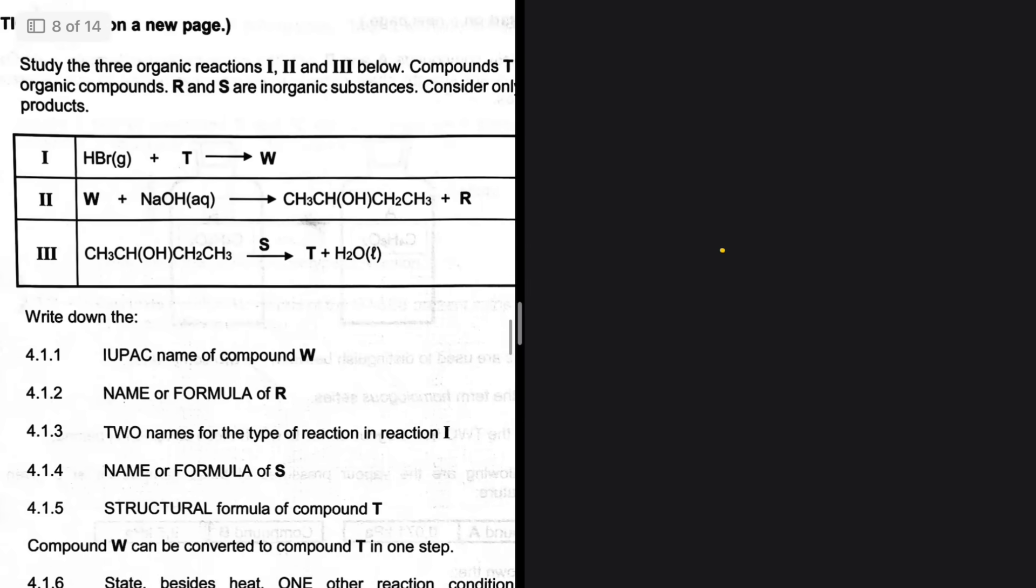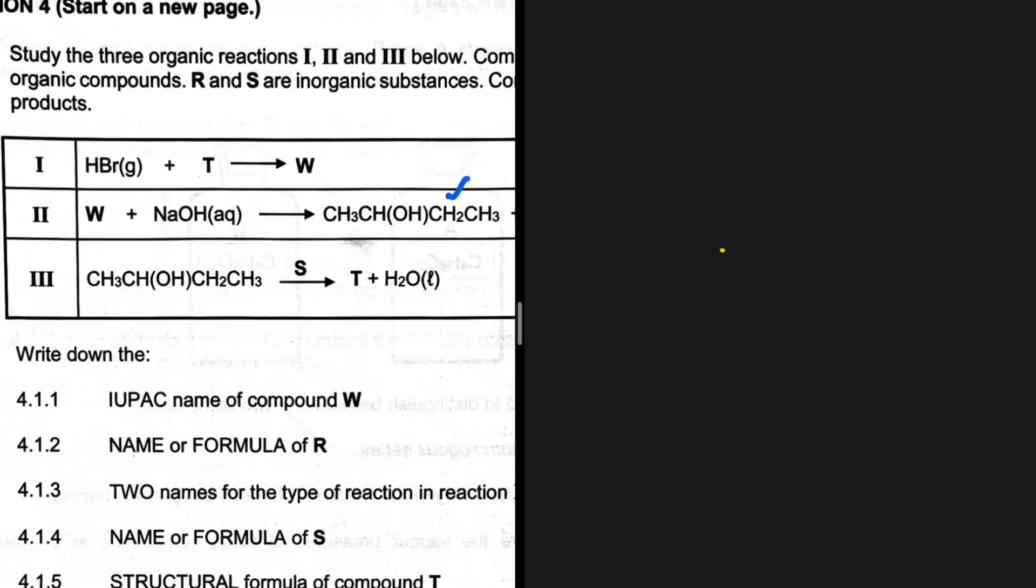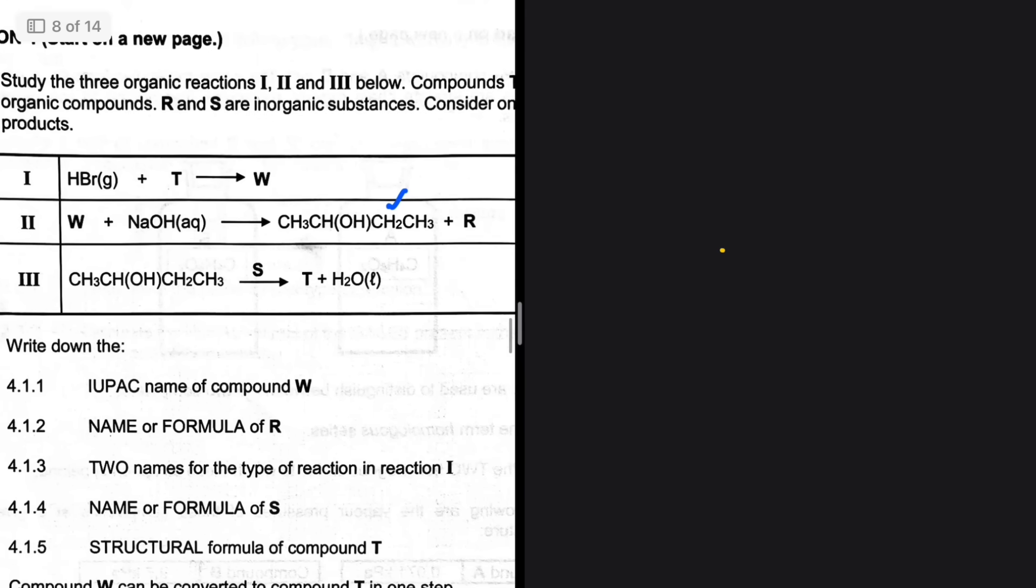There's nothing we can really unlock here with that information. Let's take a look at reaction 2. Reaction 2, we have W which reacts with NaOH to give us this compound that we have, which seems to be an alcohol. Already we can make sense of what is happening and determine T and potentially W. HBr is what we're adding to T, and then the product is W.